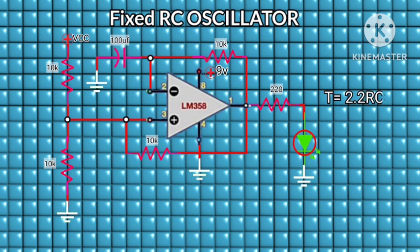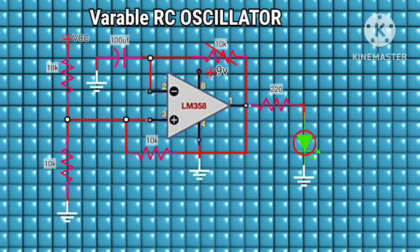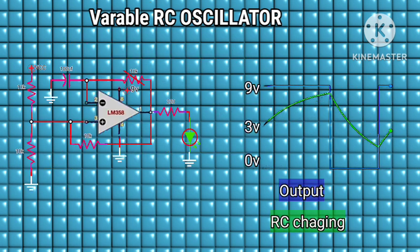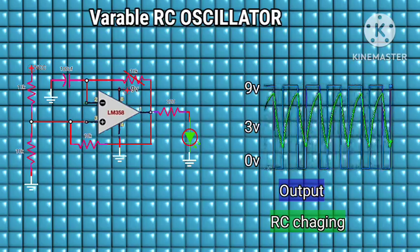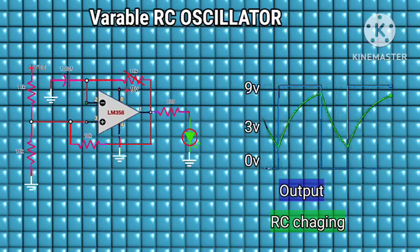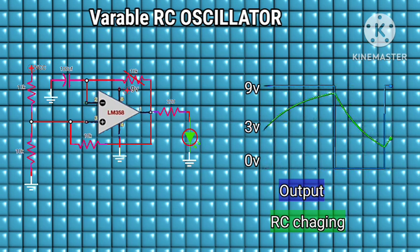The time constant can be found using the simple formula, and its frequency can be determined using this formula. This schematic shows a variable resistor in line with the capacitor, so it's called a variable RC oscillator because its frequency and time constant can be varied. The blue line shows our output actions while the green line shows the RC charging up and discharging. You can see it changes as I vary the resistor value, and the shape still remains the same.